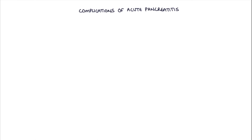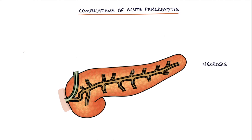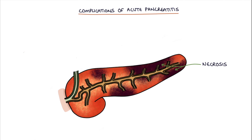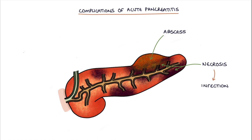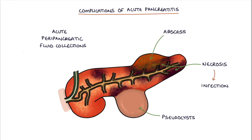The complications of acute pancreatitis include necrosis of the pancreas, infection in a necrotic area of the pancreas, formation of an abscess, acute peripancreatic fluid collections, pseudocysts — which are collections of pancreatic juice that can develop 4 weeks after the acute episode — and finally, chronic pancreatitis.